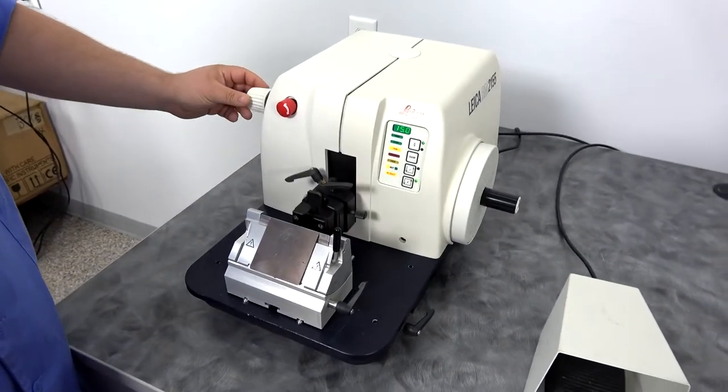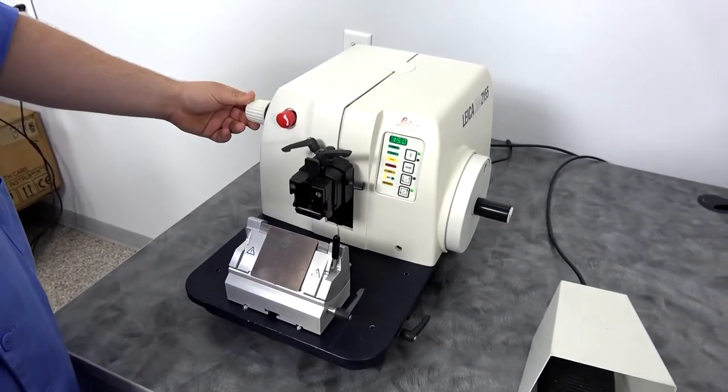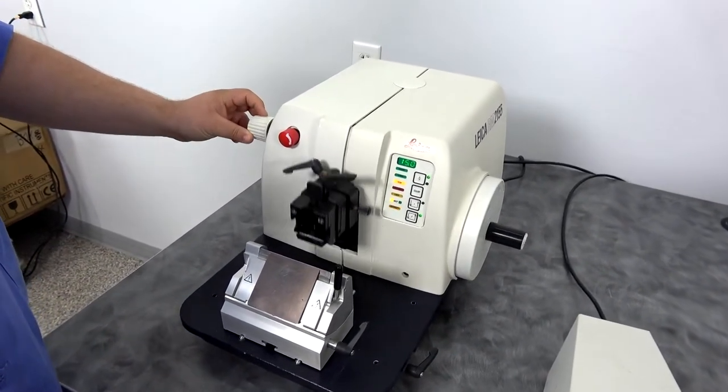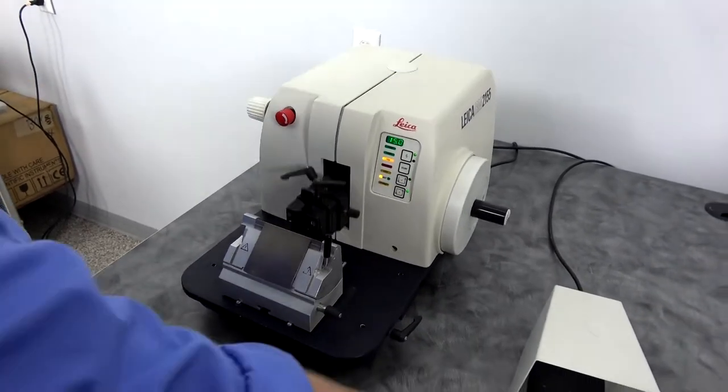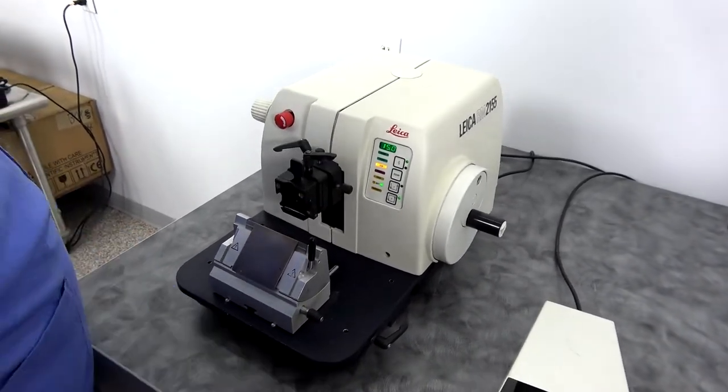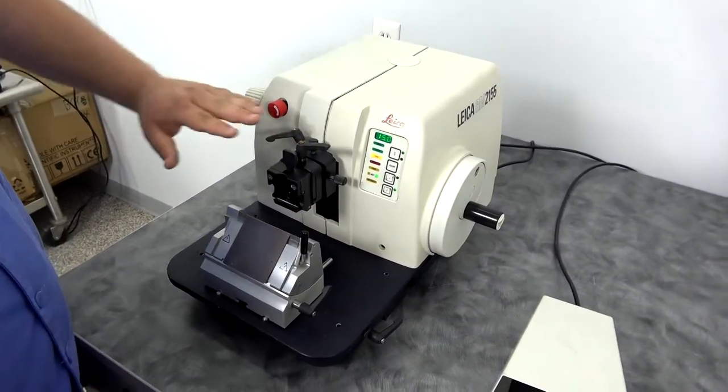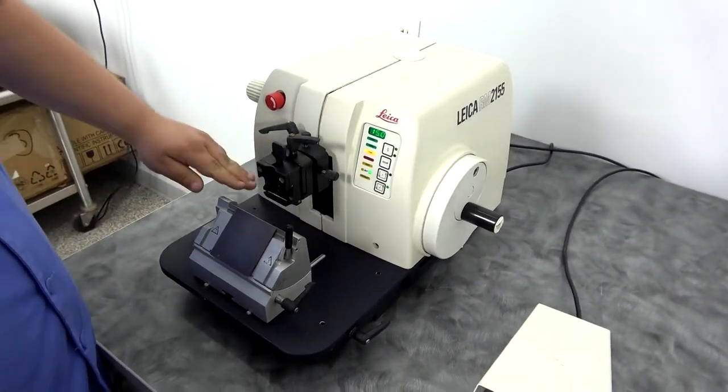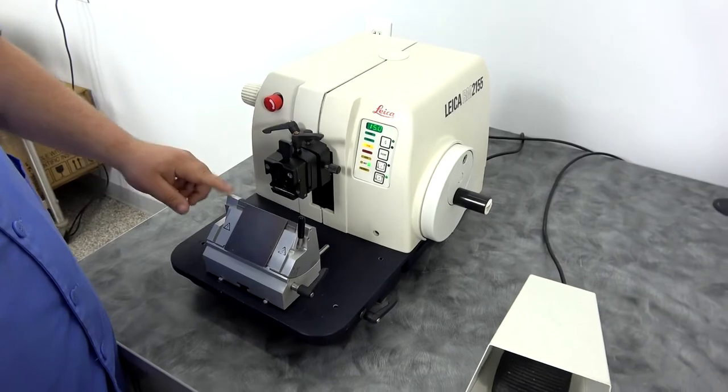When it's running, you can go in and adjust the speed of your cut, either quicker or slower. And then to get it to stop cutting, just tap that foot pedal again. It will always stop at the top to make sure you have a safe area to move your wax block and your blade.